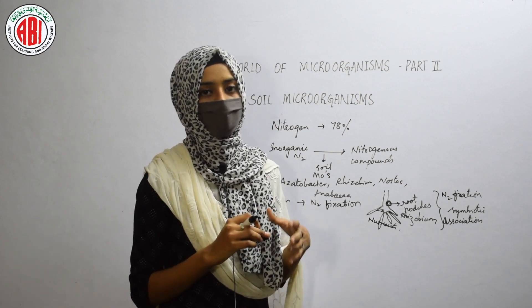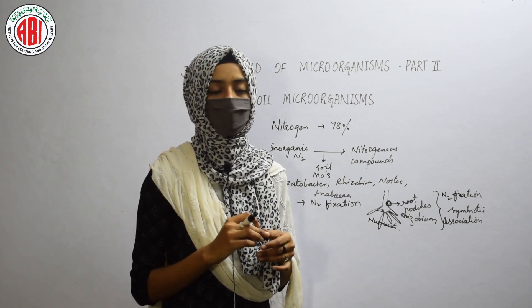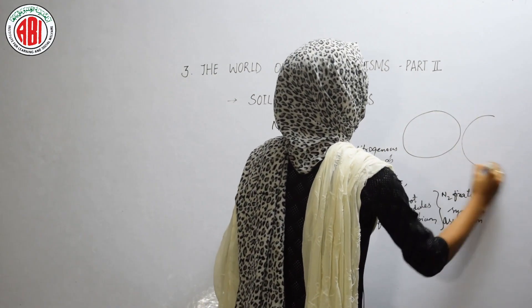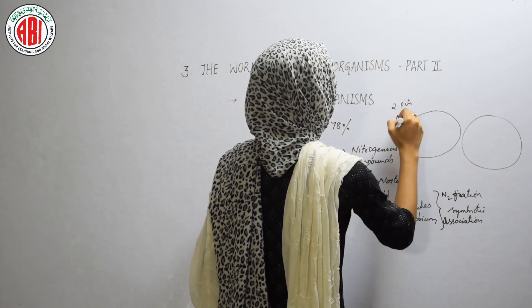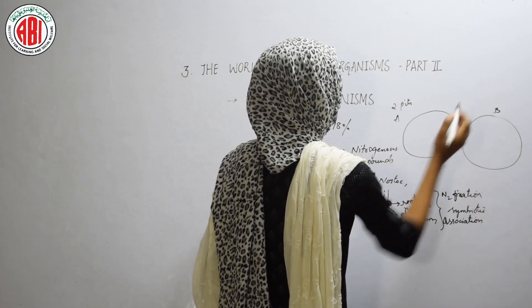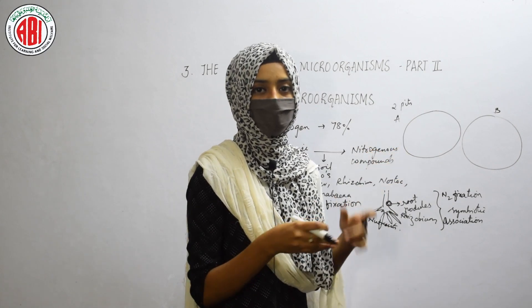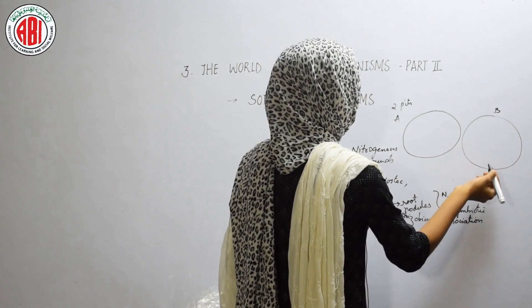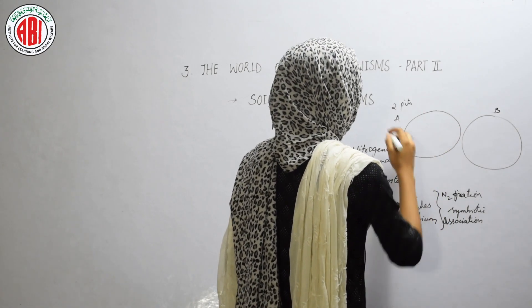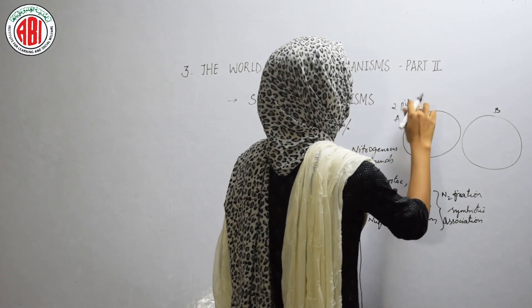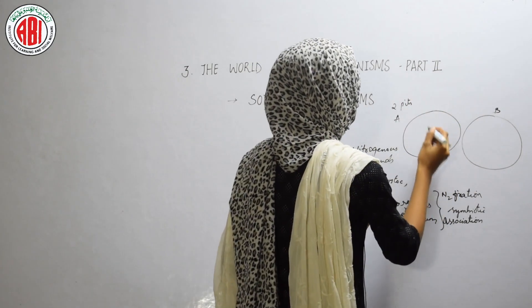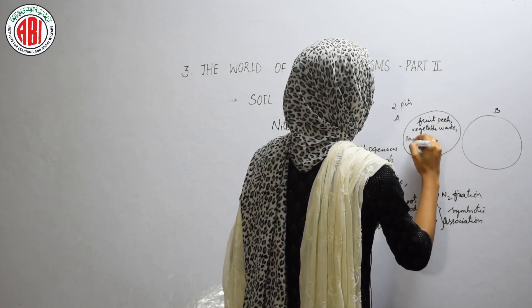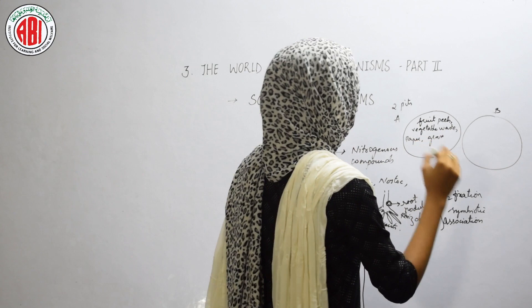To study the importance of soil microorganisms, let us see one activity. In this activity, we need to dig two holes or pits, representing them as A and B. These pits should be dug in your backyard or other grounds. After digging the two pits, we need to pour some materials into both. In pit A, we are going to put fruit peels, vegetable waste, paper, grass, and some other dry waste materials.